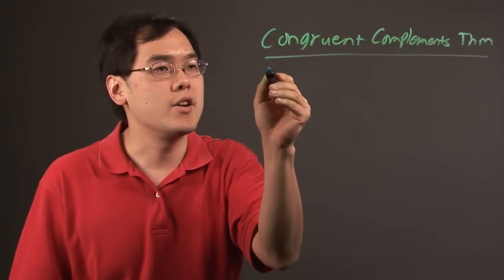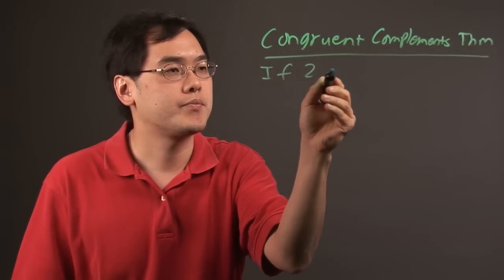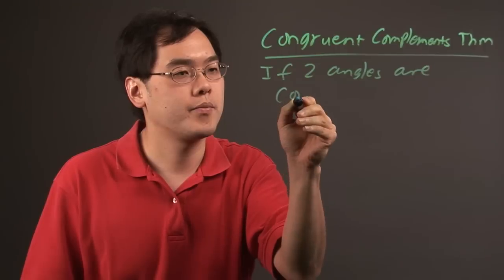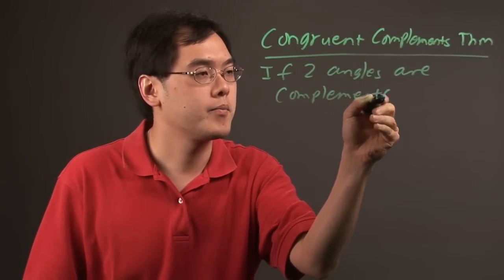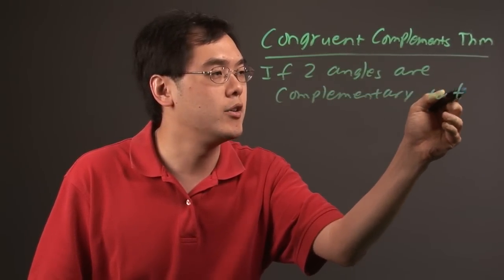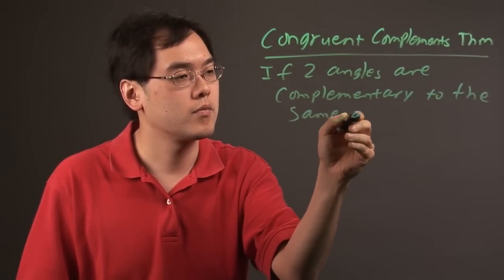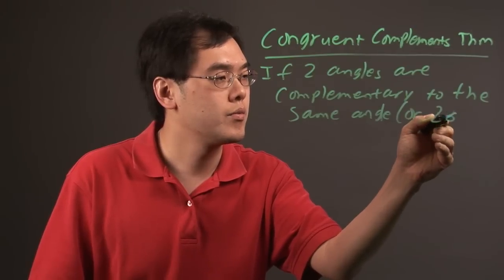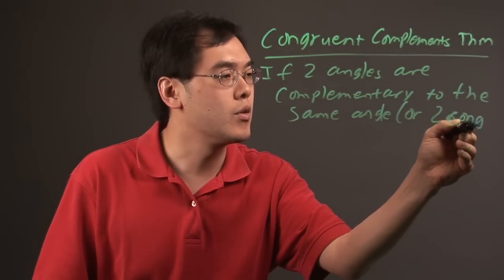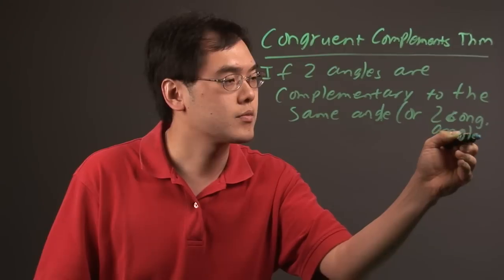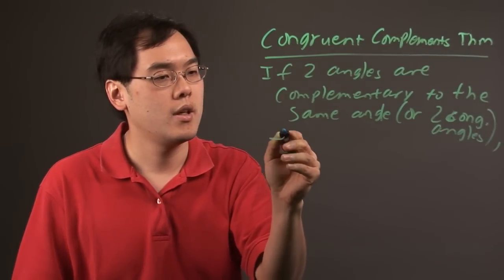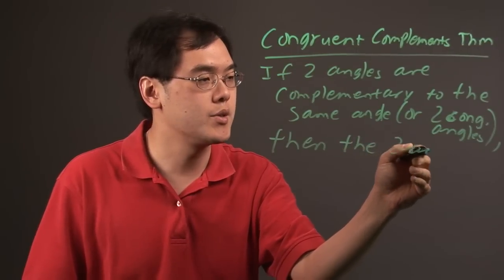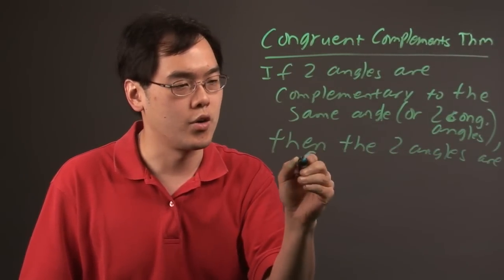Now, the idea here is if two angles are complementary to the same angle or two congruent angles, then the two angles are congruent.